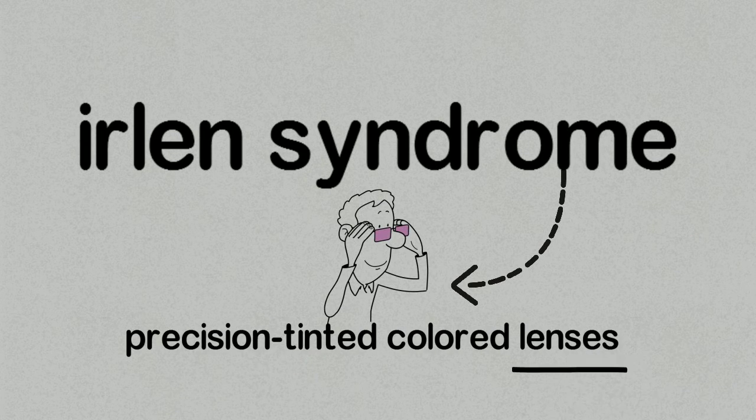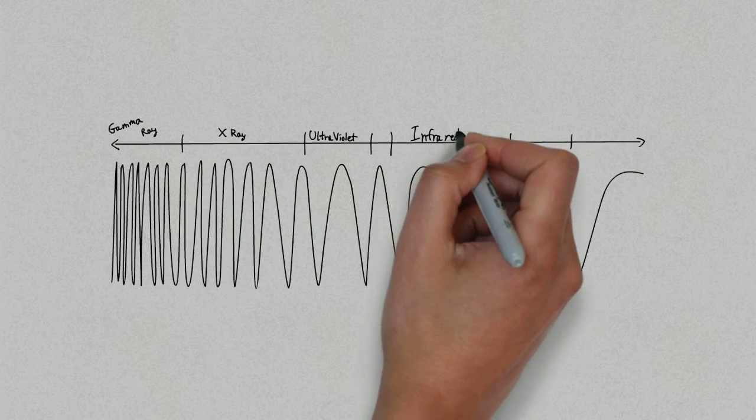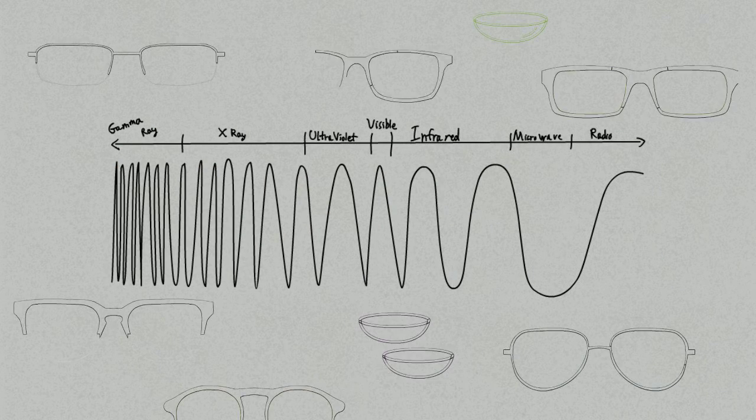Precision tinted colored lenses might be just what you need. They filter the specific light energy that is putting stress on your brain causing your headaches.